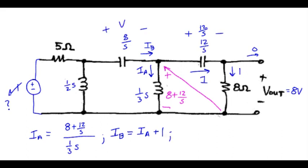I'll call the voltage across the capacitor VC. VC is IB times the impedance 8 over S.